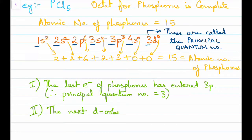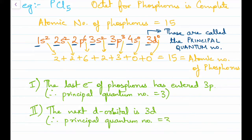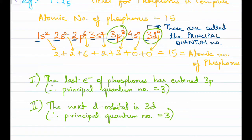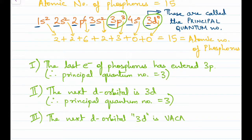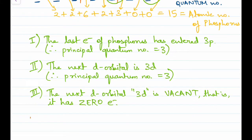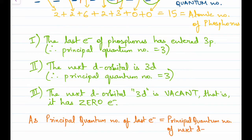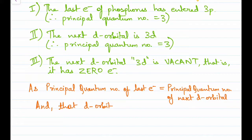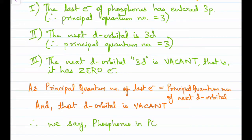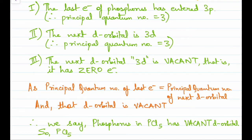After 3p, the next d orbital is 3d, and its principal quantum number is also 3. The last electron of phosphorus entered 3p — principal quantum number 3. The next d orbital, 3d, has principal quantum number 3 as well, and it is empty (zero electrons). Since the principal quantum number of the last electron entered equals the principal quantum number of the next d orbital, and that orbital is empty, phosphorus in PCl5 has vacant d orbitals — therefore PCl5 is an electrophile.